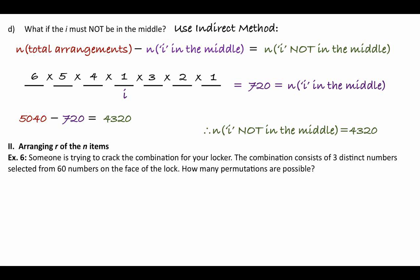Those were examples where we had a certain number of items and arranged them all. There will also be cases where you have n items to choose from but you're only choosing r of them at a time — where r is less than n.